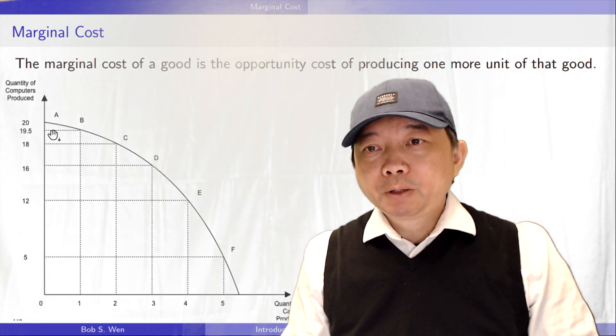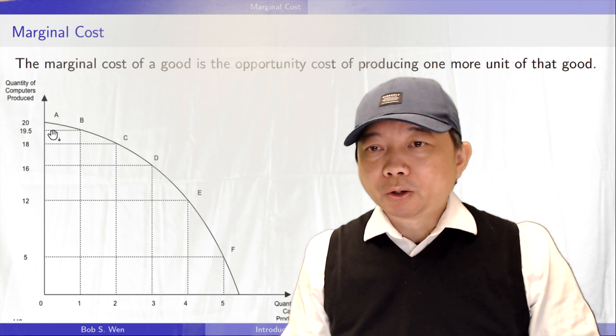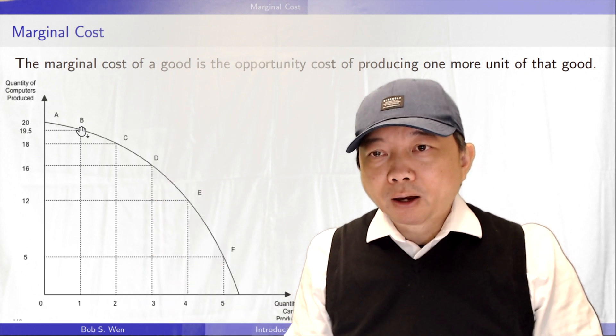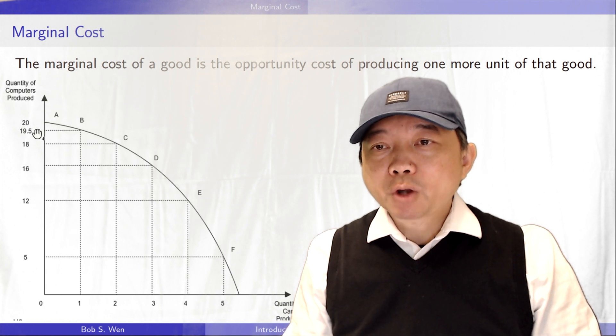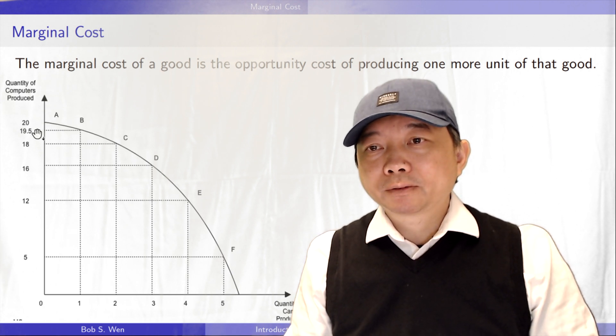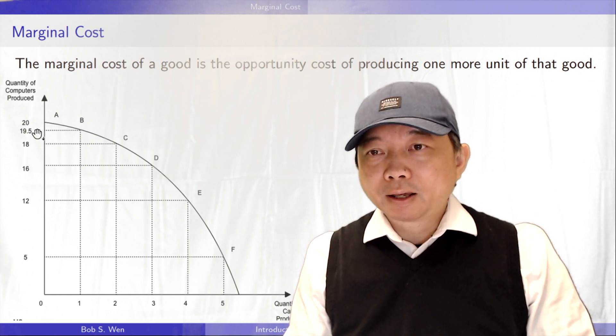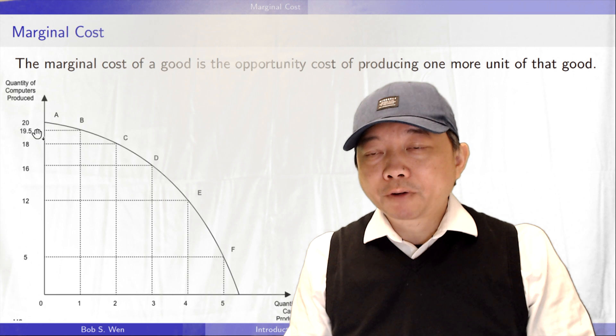we find that if we make one more car from zero to one, we have to give up 0.5 units of computers from 20 to 19.5. Therefore, the marginal cost of producing one more car is 0.5 units of computers.